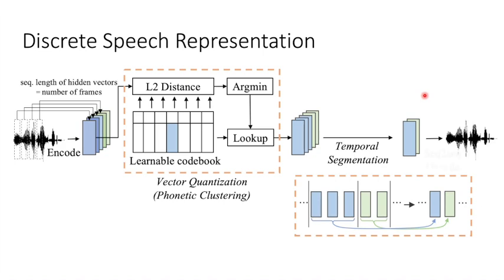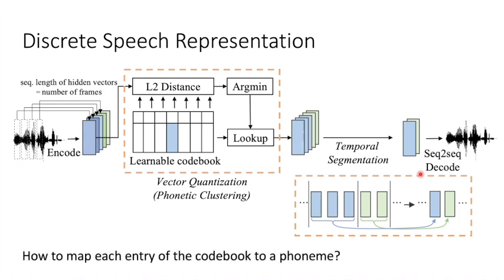After this, we pass the shorter code sequence to a decoder. The decoder will try to reconstruct the input audio. Now, the problem is, how to make sure each code is corresponded to a phoneme.